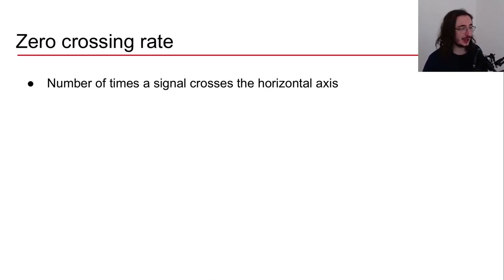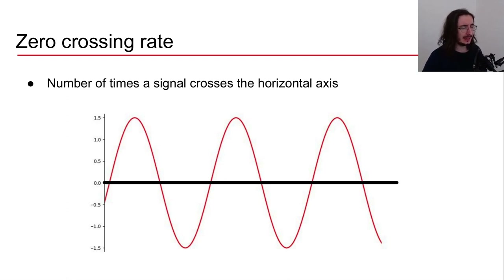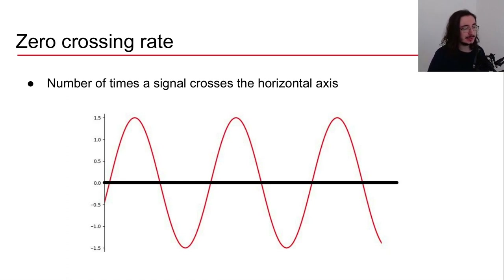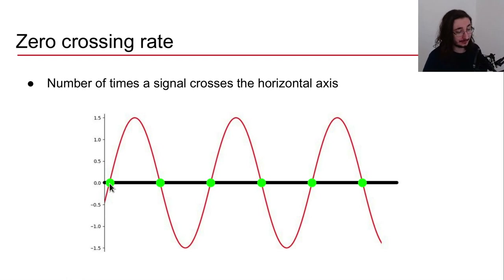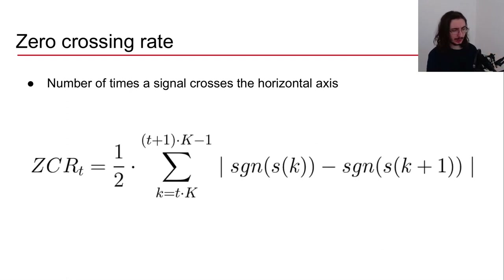The third time domain audio feature is the zero crossing rate, a quite popular feature used in both speech recognition and music information retrieval. It provides information about the number of times a signal crosses the horizontal axis. Visually, here we have a simple signal for one frame, and the zero crossing rate counts each crossing — for this signal, that equals six crossings.